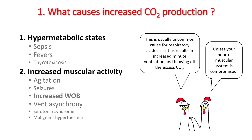What causes increased CO2 production? These are hypermetabolic states like sepsis, fevers, thyrotoxicosis, or increased muscular activity as seen in agitation, seizures, increased work of breathing, vent asynchrony, etc. These are usually an uncommon cause for hypercapnia because CO2 stimulates your respiratory centers, therefore increases your minute ventilation and blows itself off. You can have hypercapnia in these situations if you have neuromuscular system problems and are unable to increase your minute ventilation.